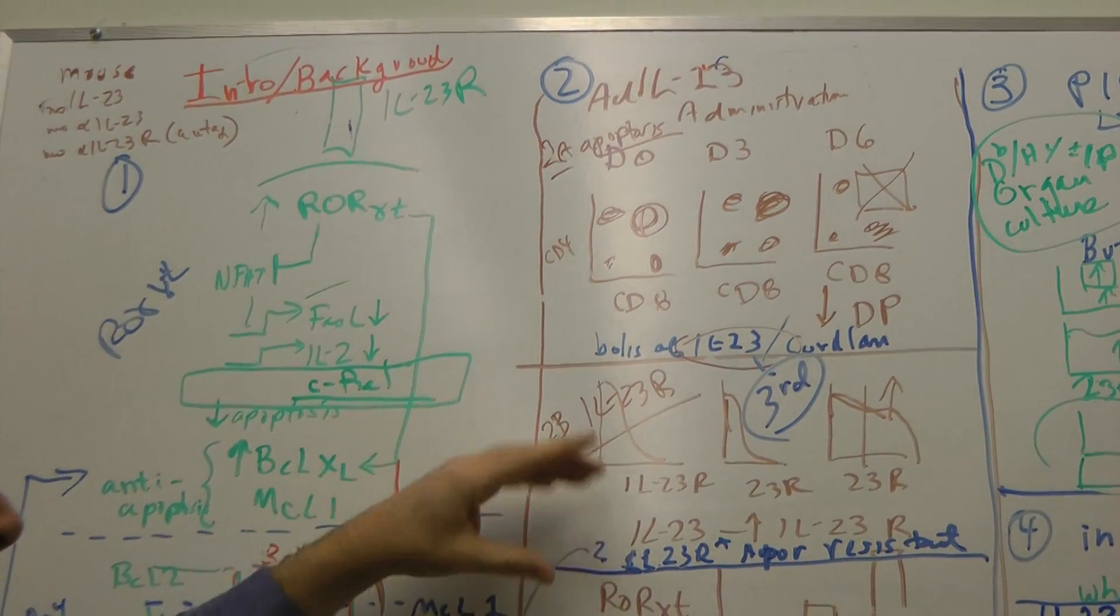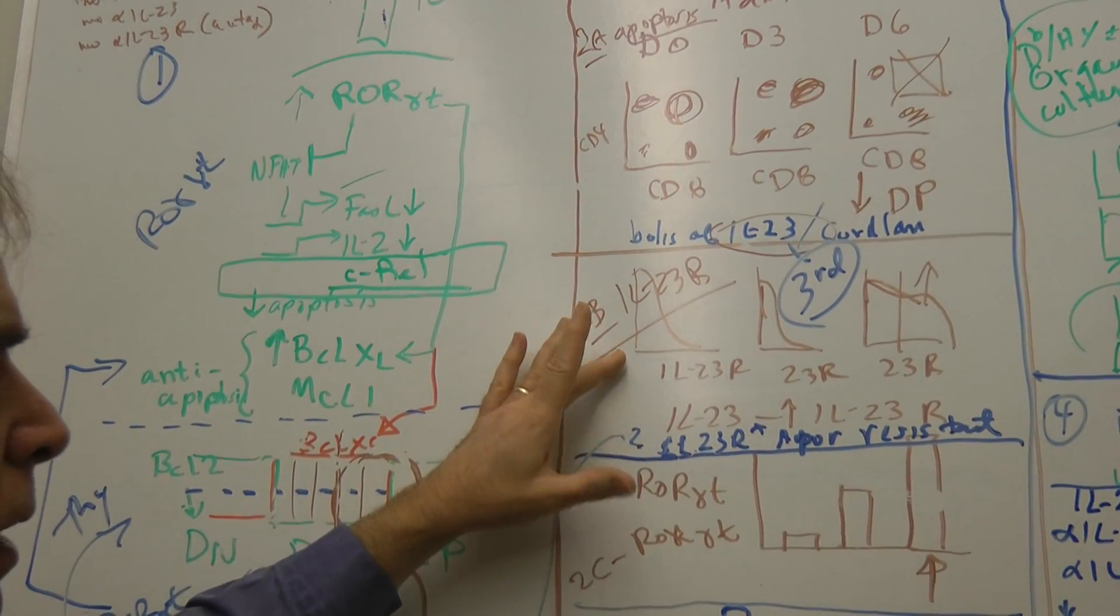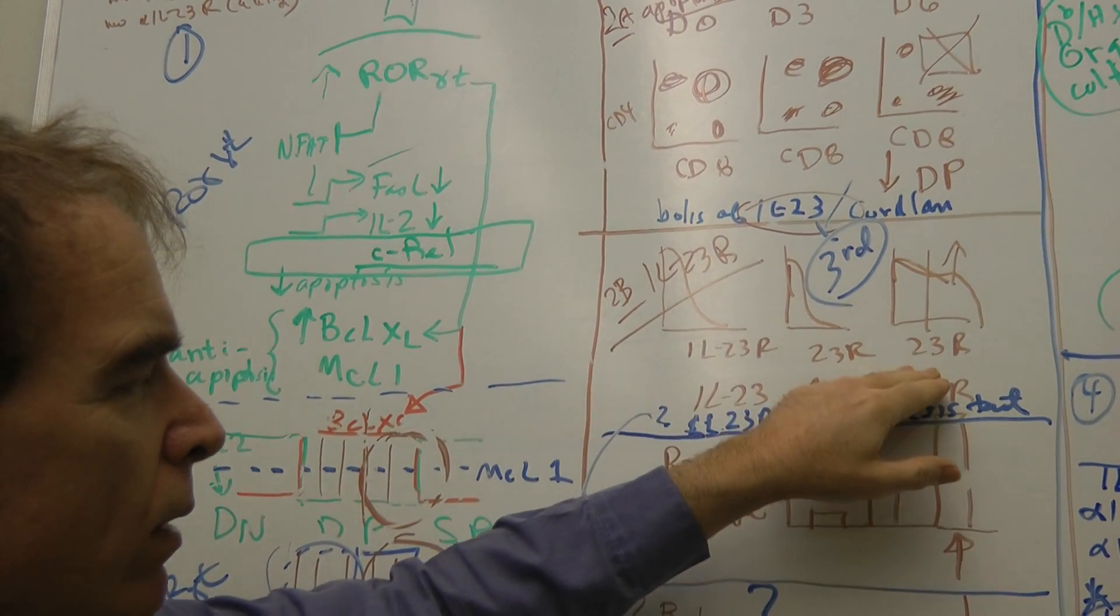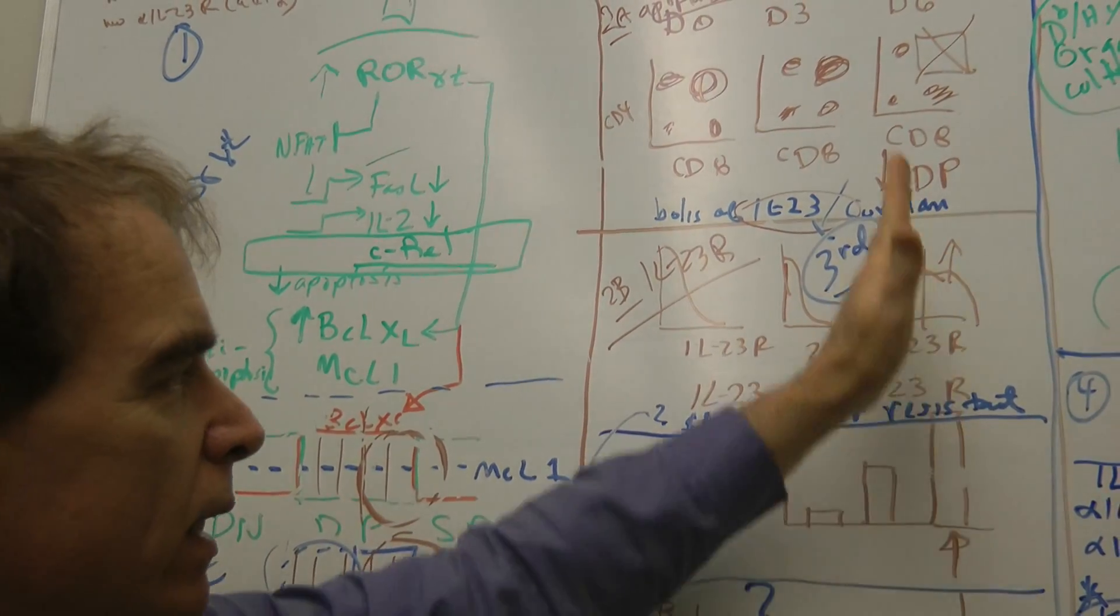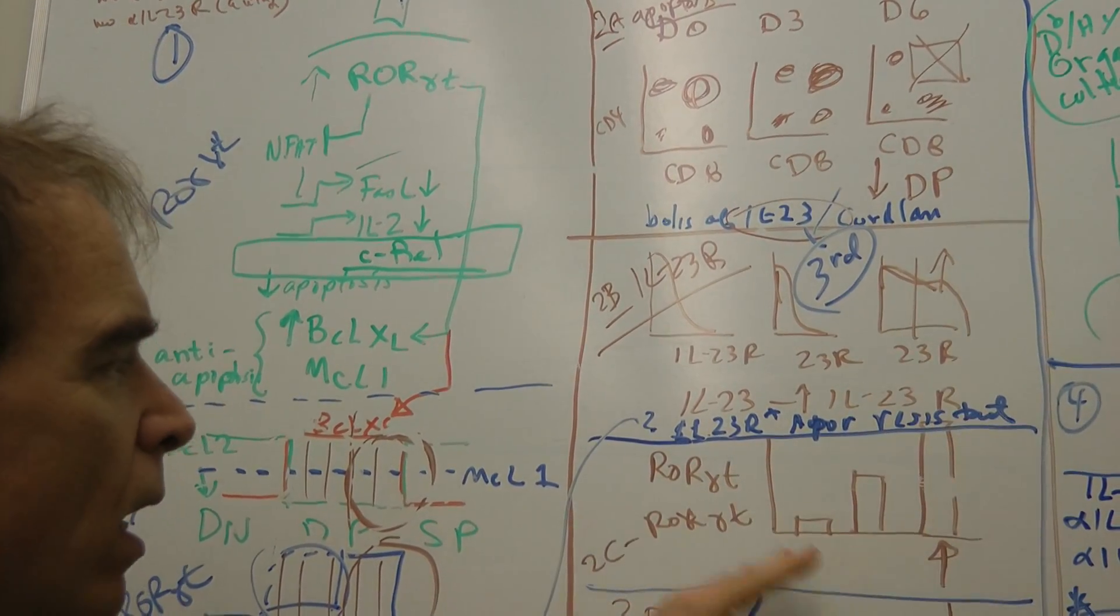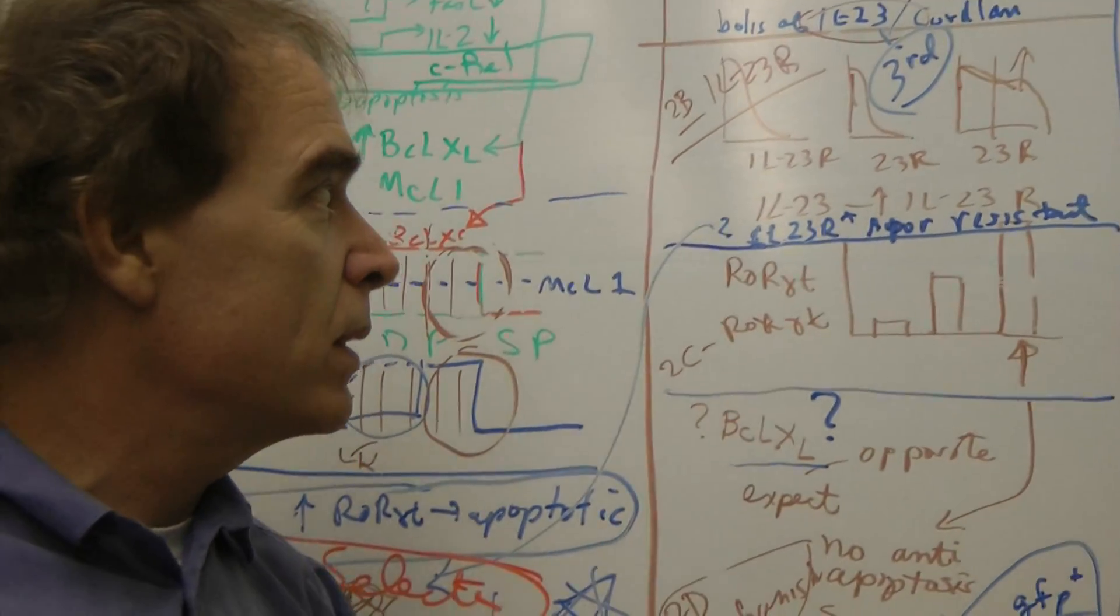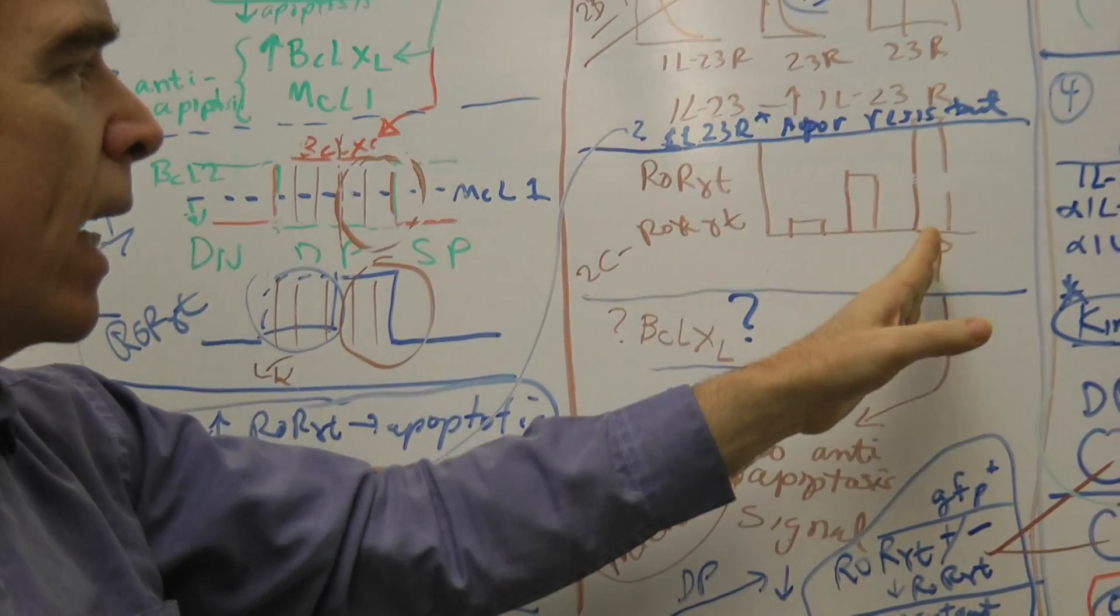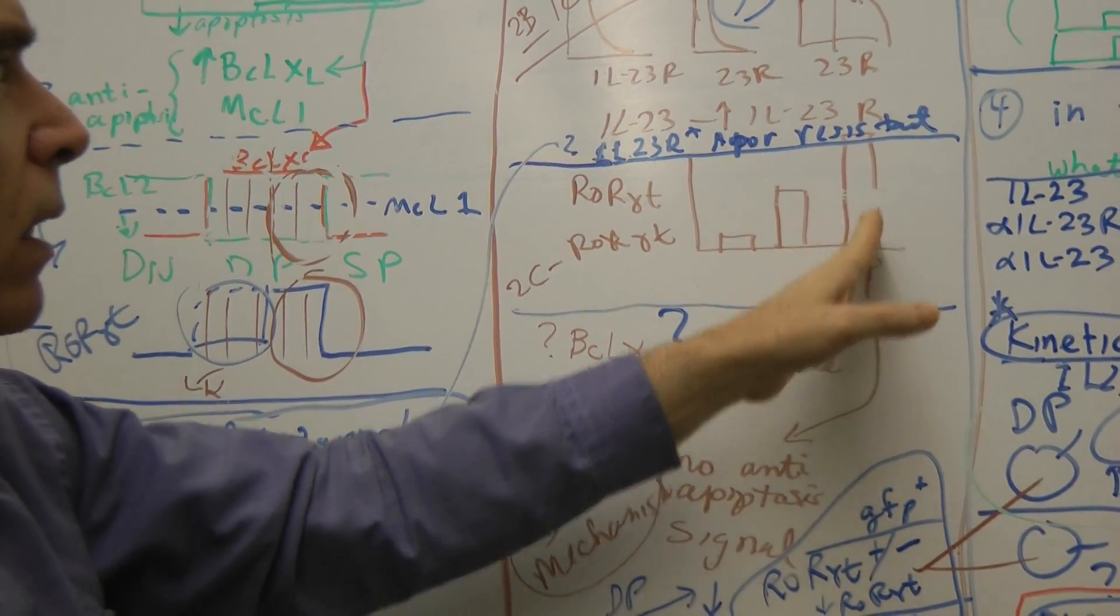What about ROR gamma T? Or what about IL-23 receptor? Both these go together, IL-23 receptor and ROR gamma T. Then you show our IL-23 receptor by FACS. It goes up, and so they're signaling apoptosis. And then ROR gamma T goes up. When you give IL-23, signal through IL-23 receptor, it's up and operated by IL-23. Then you're going to get high levels of ROR gamma T. Now the question is, and then that causes apoptosis.